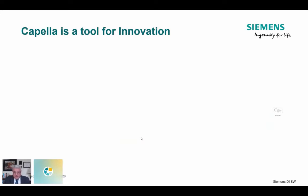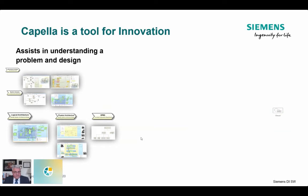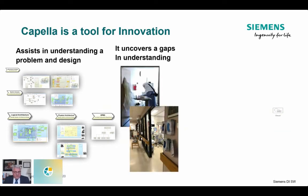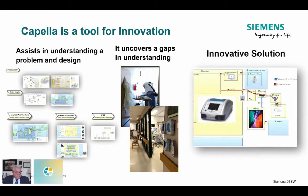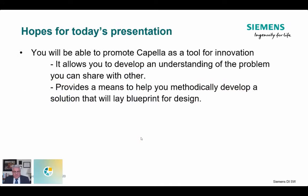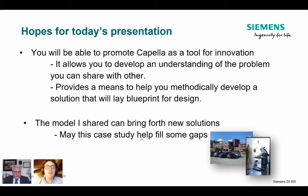I basically start showing how those functional chains could be put together as a design sprint to add this capability to the existing system. Through this we've started to see that Capella is a tool for innovation: it assists in understanding the problem and the design, it uncovers gaps in understanding by seeing things that were missing that we didn't have before, and eventually it can lead to that innovative solution. I hope you'll be able to promote Capella as a tool for innovation. A presentation like this allows you to develop understanding of the problem that you can share with others and provides you a means to methodically develop a solution that will lay a blueprint for design. More importantly, I hope the model I shared today can bring forth new solutions — may this case study help fill some gaps, and maybe someone with the ability to actually build this product can take this knowledge and go forth. Thank you very much.